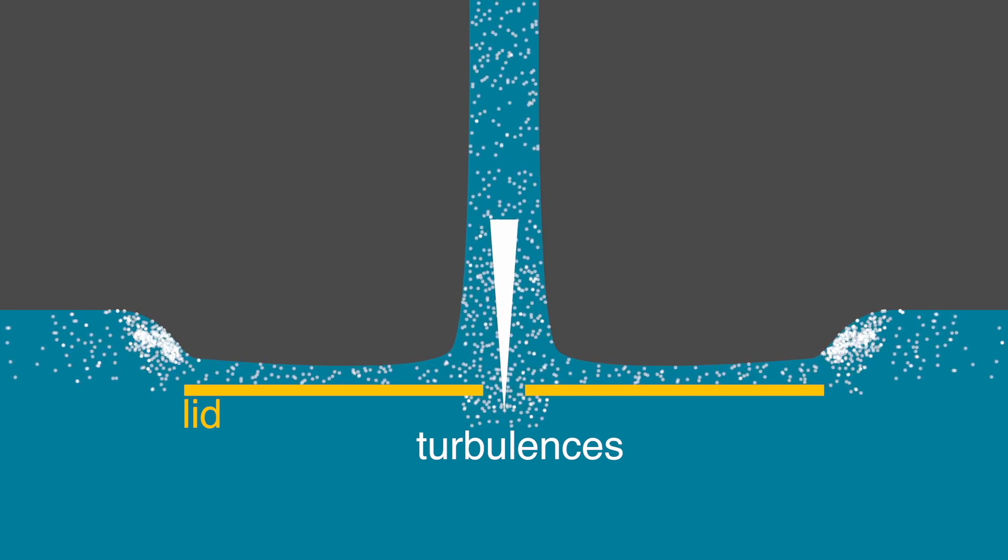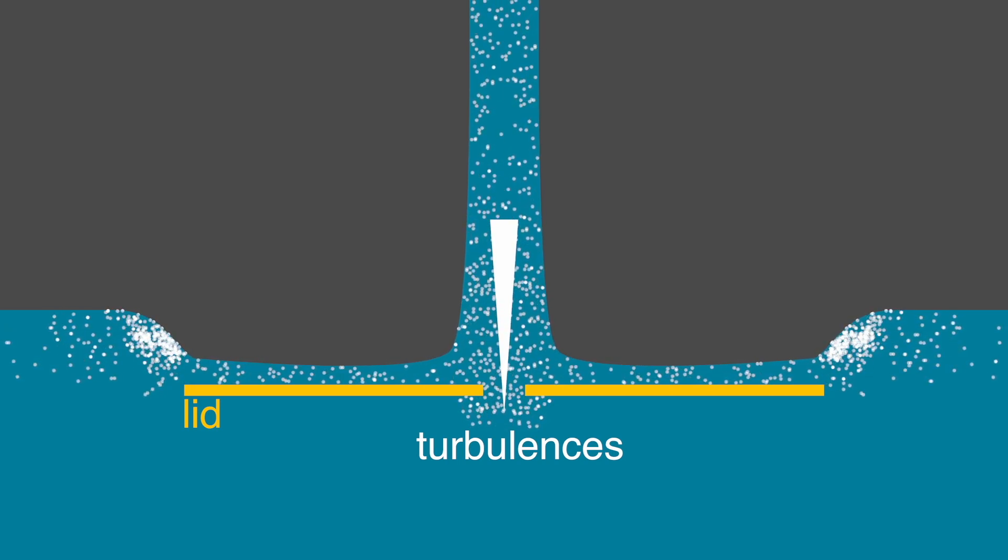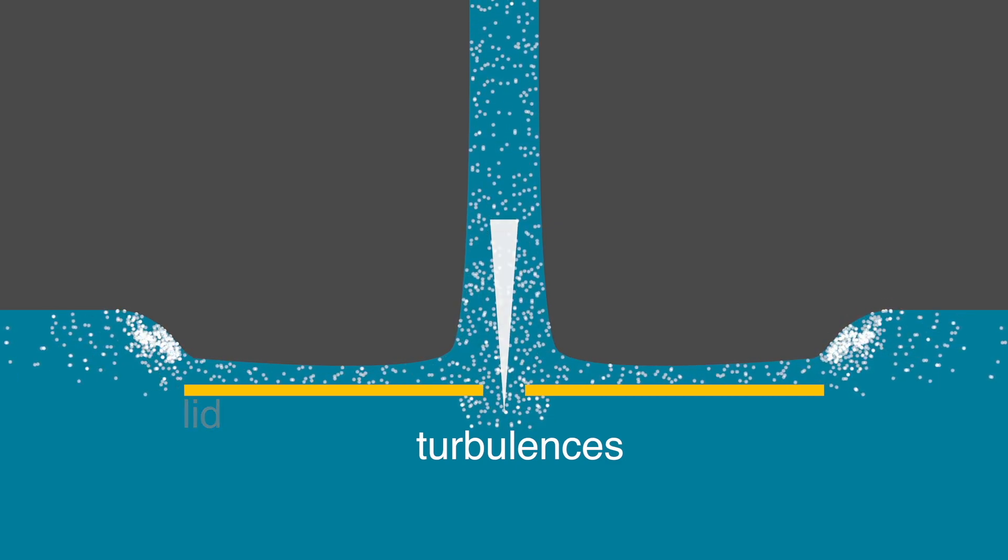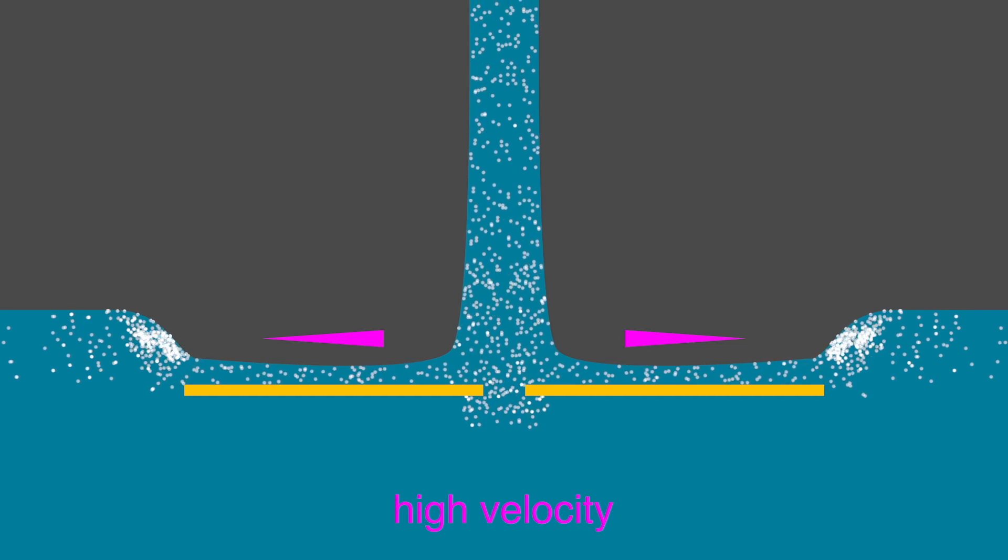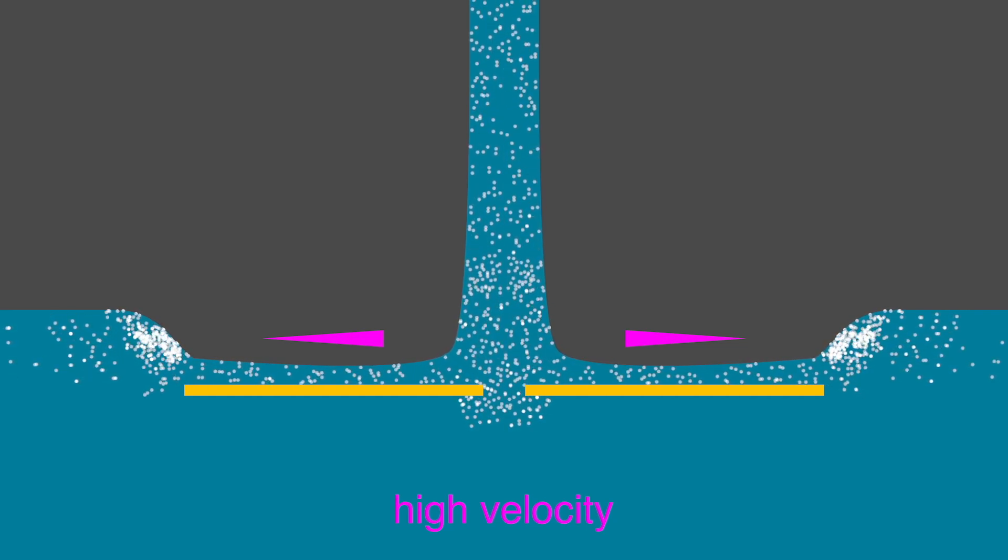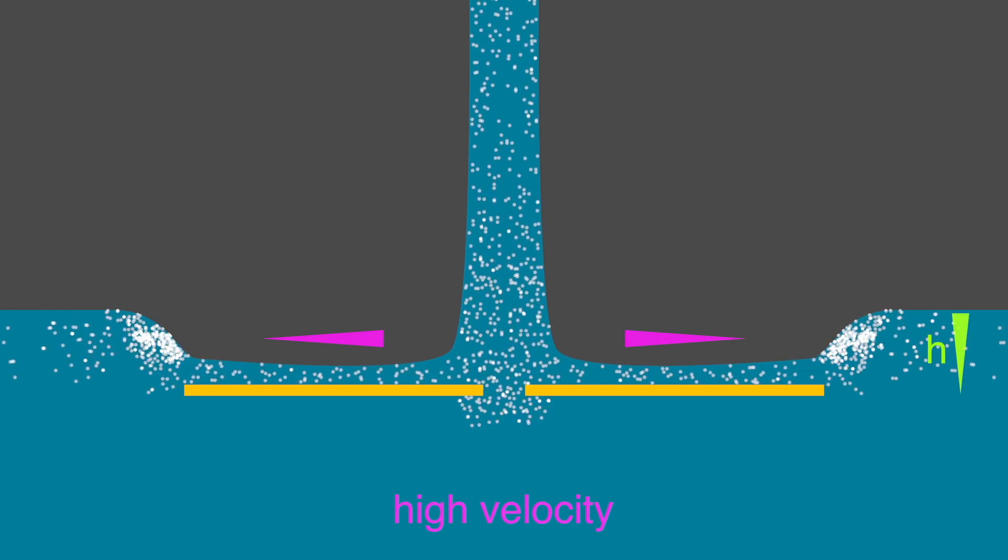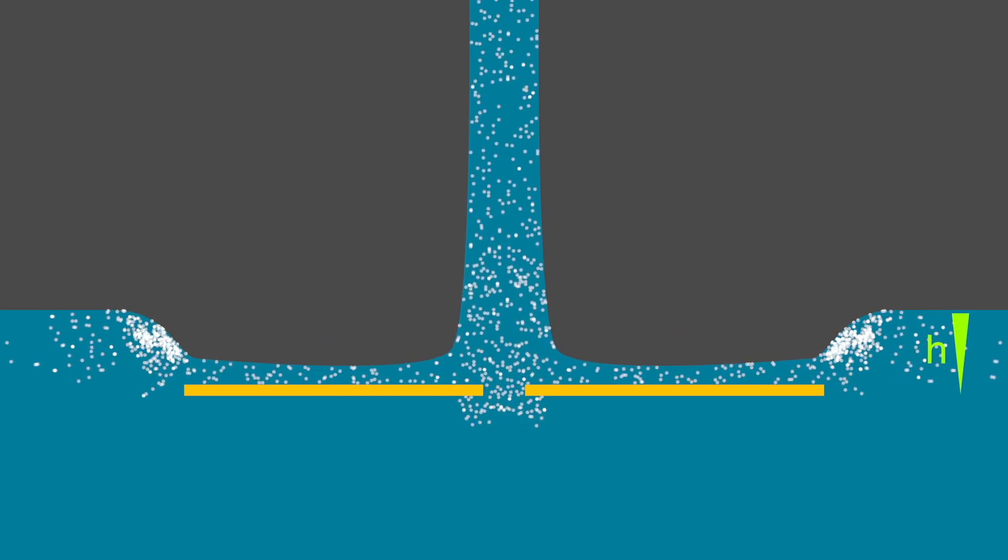So the lid dances back and forth just a little bit, but remains quite stable right under the water jet. Another part of the water jet hits the lid so that the water quickly flows radially outwards. This pushes the lid a little bit into the water. The water flowing quickly on the surface of the lid